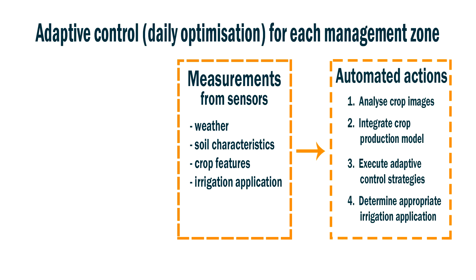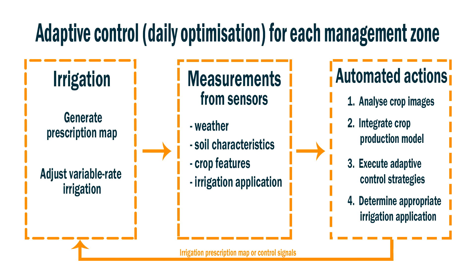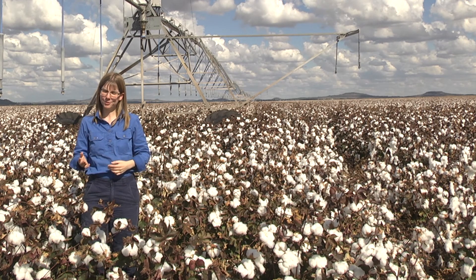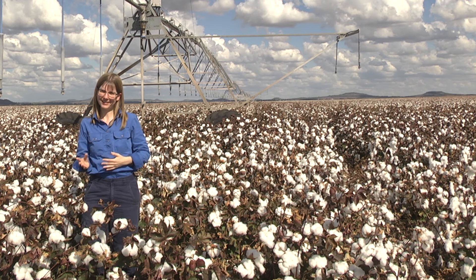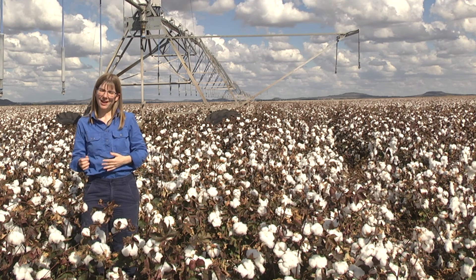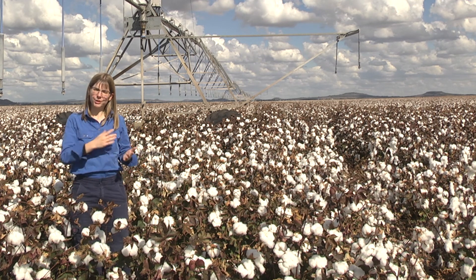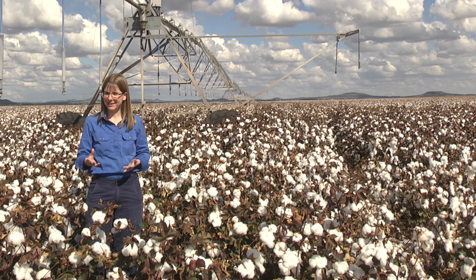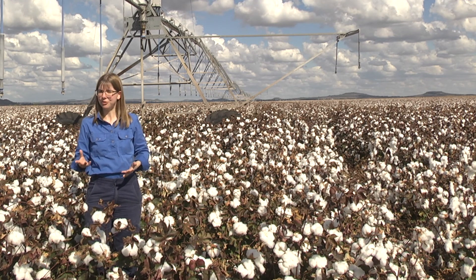Over the past four seasons we have been conducting research to evaluate and refine our software that incorporates these different data streams. The benefits include improved uniformity in crop growth and yield, as well as improved water use through reduced over and under watering, which leads to up to 10% yield improvements.